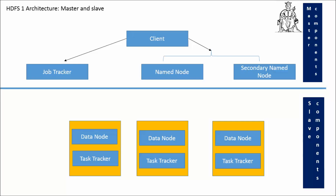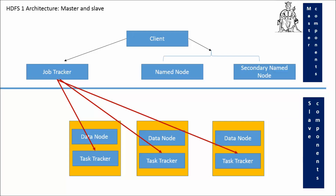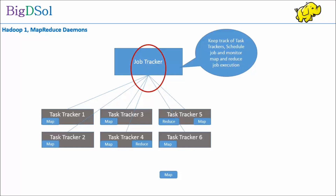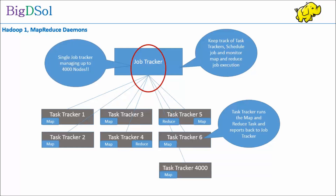Hadoop 1 was designed to keep Big Data bulk processing in mind, and MapReduce was the only option it supported. As you can see, there is a NameNode having metadata information, and a JobTracker ensuring TaskTrackers are processing the data, and DataNodes which actually contain the data. Looking at MapReduce daemons, JobTracker keeps track of TaskTrackers, schedules jobs, and monitors map and reduce job execution. TaskTracker runs the map and reduce tasks and reports back to JobTracker. A bottleneck for scalability is evident — a single TaskTracker managing up to 4,000 tasks.